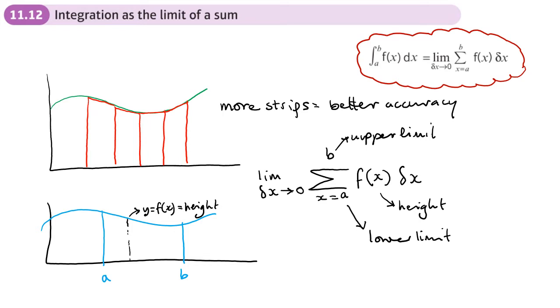Remember, delta X represents a small change in X. So you can think of that as the width of the strip. Now, because these strips are so narrow, we don't bother with trapezii or trapeziums anymore. We just think of them as like little single lines like this.